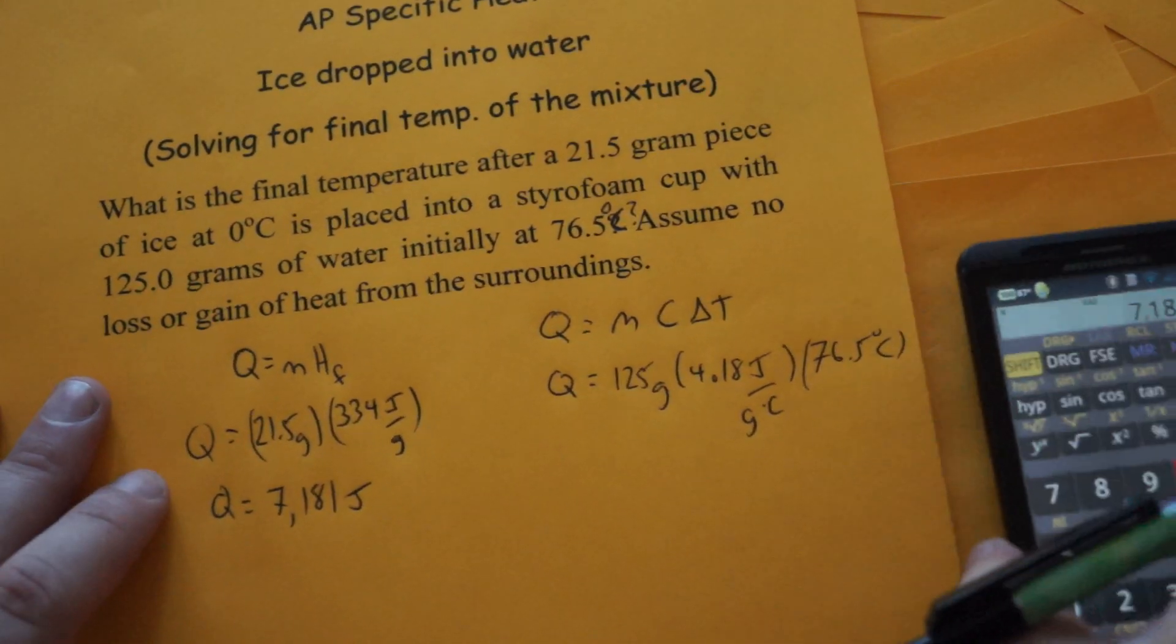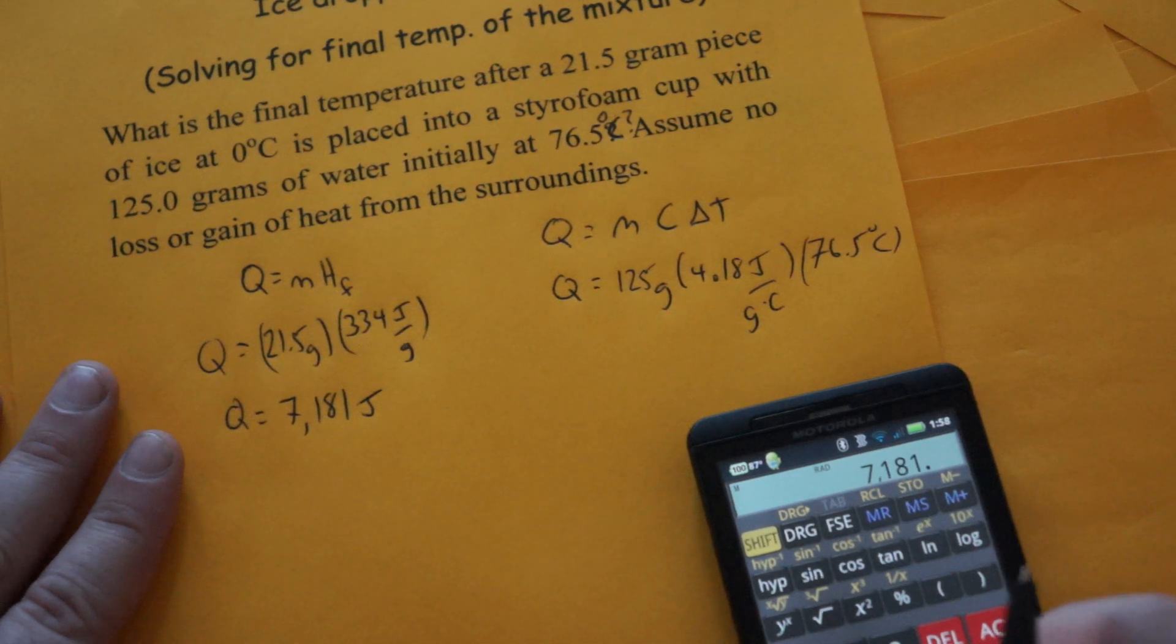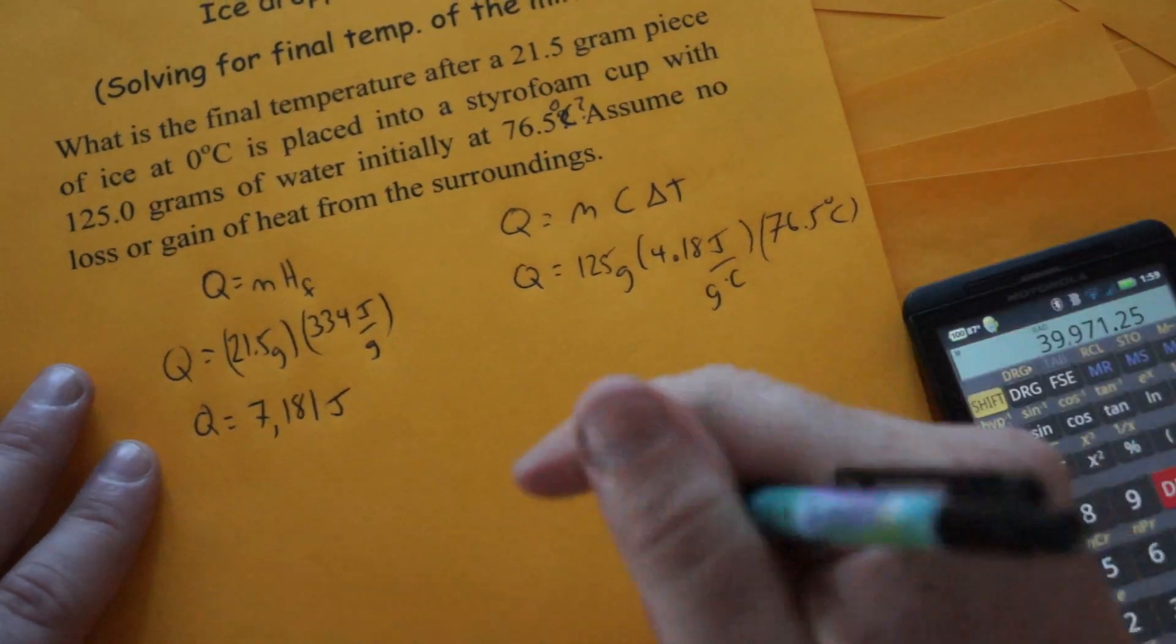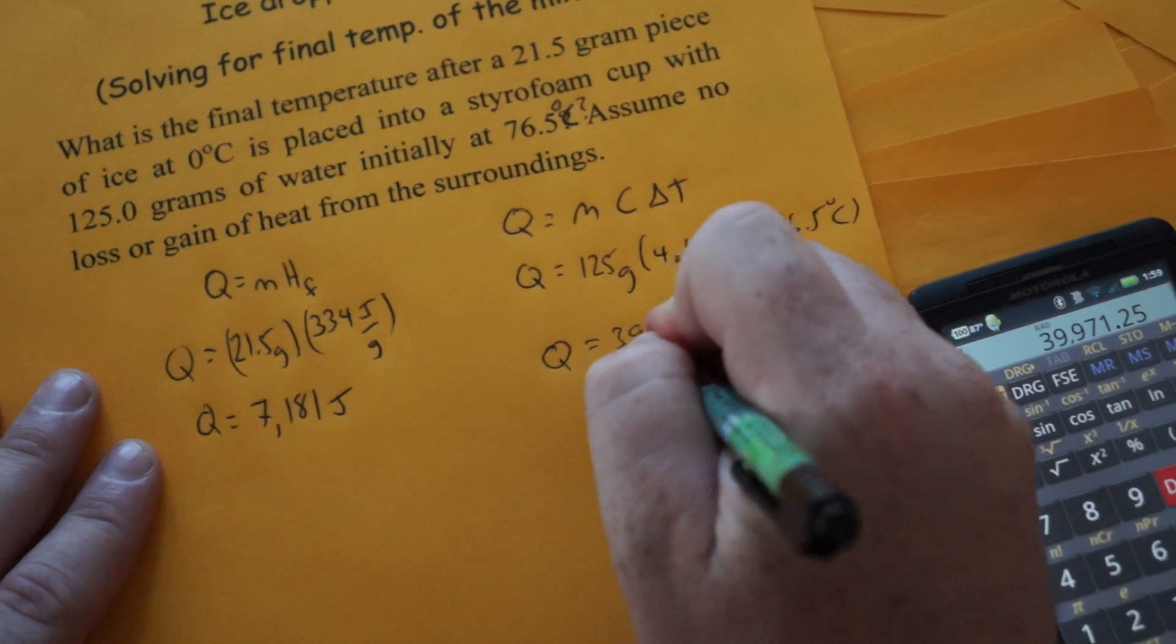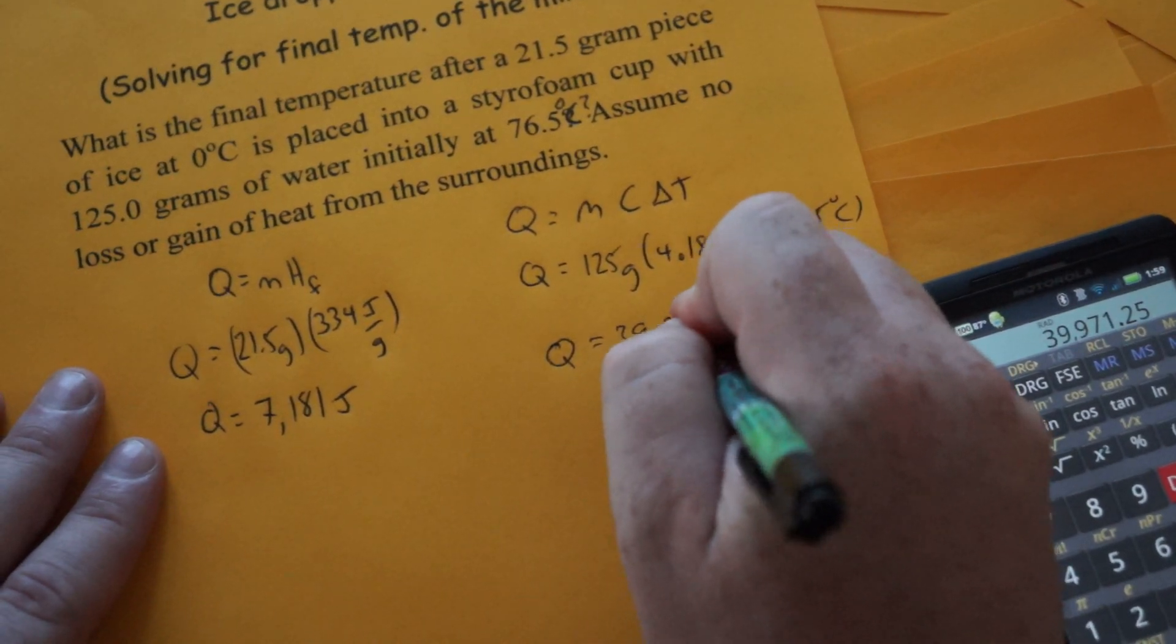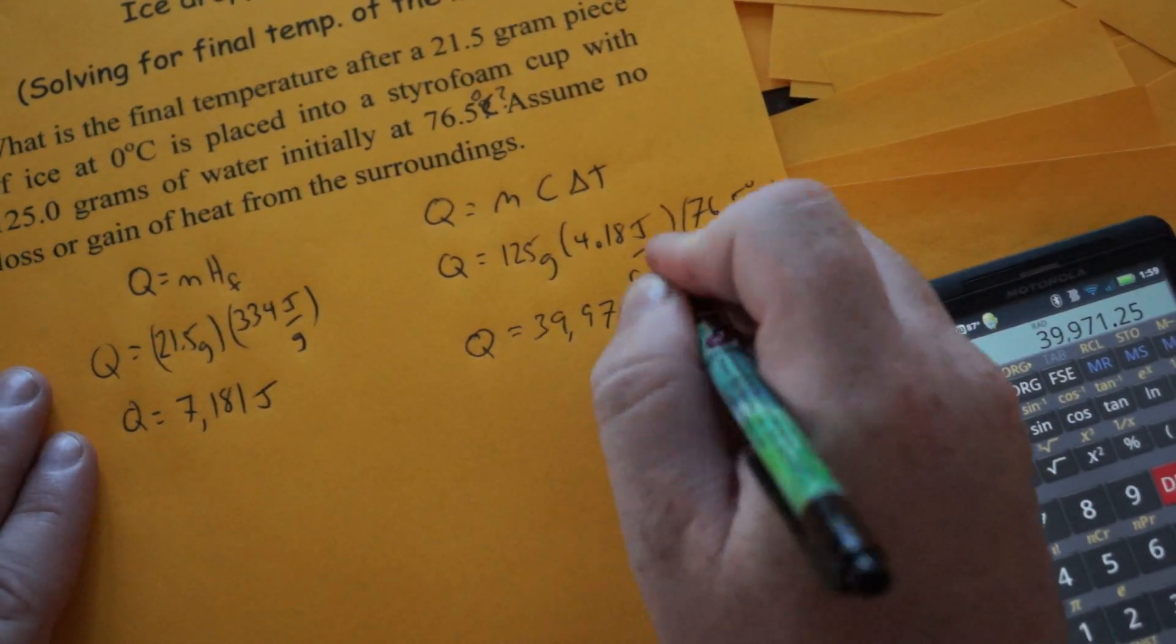You can make it negative it doesn't matter right now. So 125 times 4.18 times 76.5, that gives us 39,971 joules.